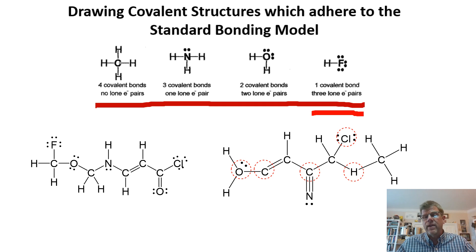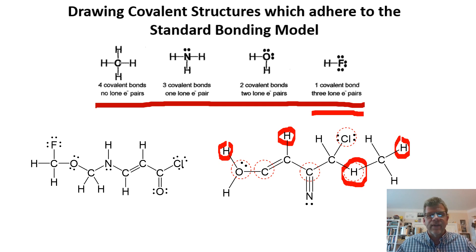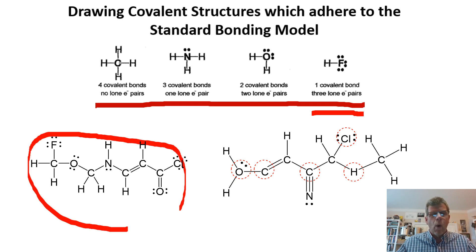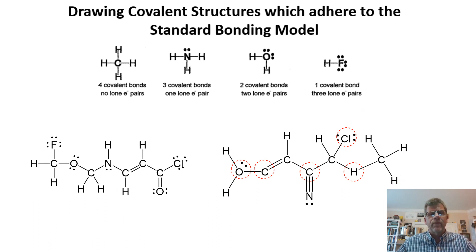Hydrogen always only has one covalent bond emanating from it — it's the classic end cap, always on an end. Here we have a hydrogen with two bonds emanating from it, which cannot happen. So, whether we're trying to ascertain the viability of an entire molecule or to pick out problem atoms that don't adhere to the standard bonding model, we can do that as well.